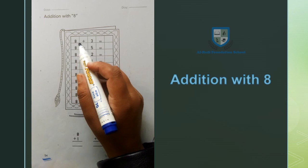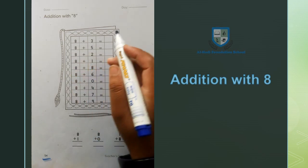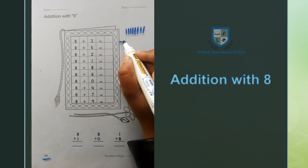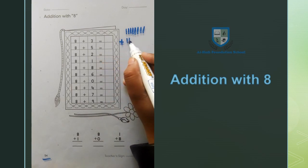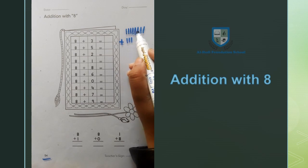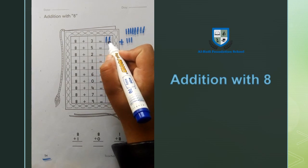So first of all, the number is 8 plus 3. We have 8 plus 3. Now we will add 8 lines and 3 lines: 1, 2, 3. Now we will count these lines. 1, 2, 3, 4, 5, 6, 7, 8, 9, 10, 11. 8 plus 3 equals 11.